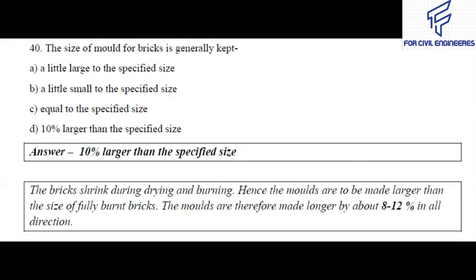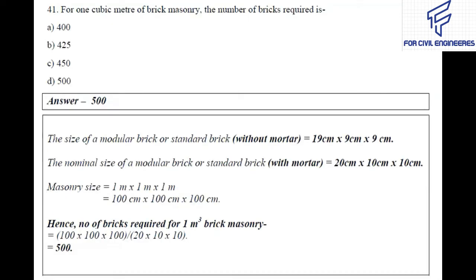Question number 40: The size of mold for bricks is generally kept — a little larger than the specified size, a little smaller than the specified size, equal to the specified size, or 10% larger than the specified size? The right answer is 10% larger than the specified size. The bricks shrink during drying and burning, hence the molds are to be made larger than the size of the fully burnt brick.